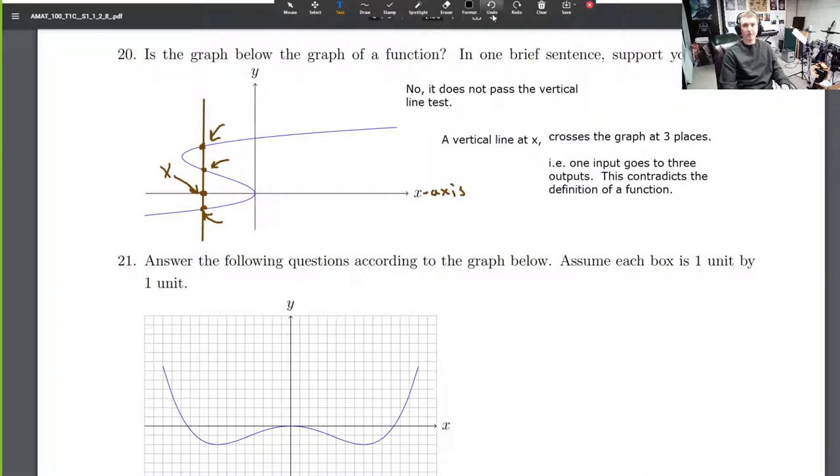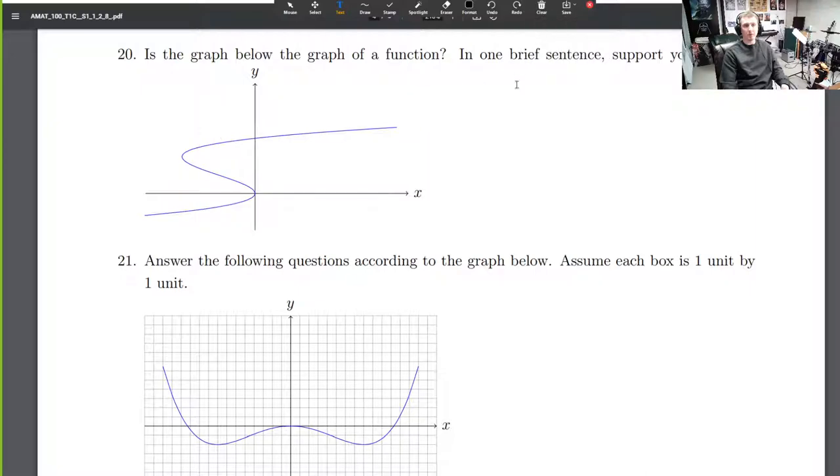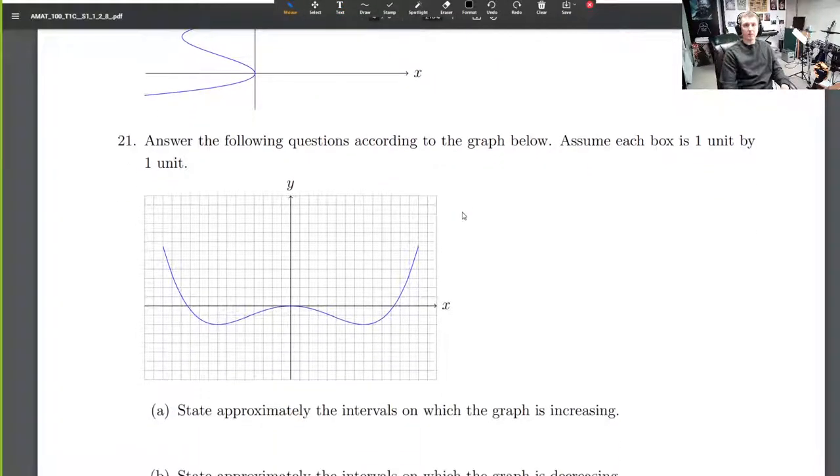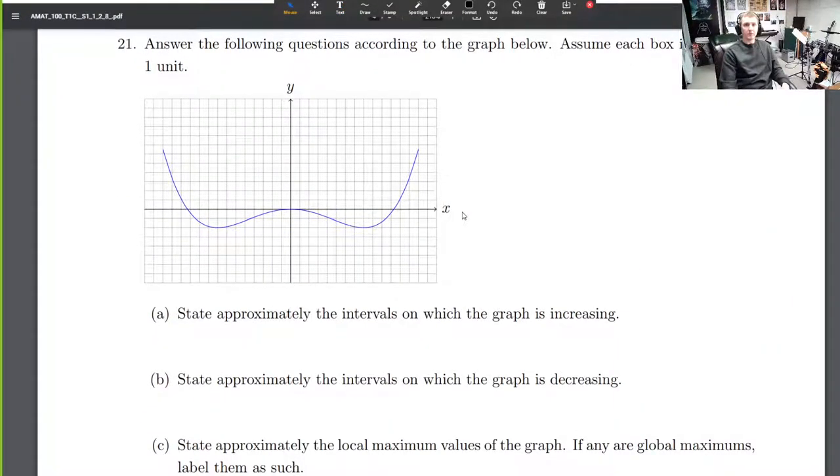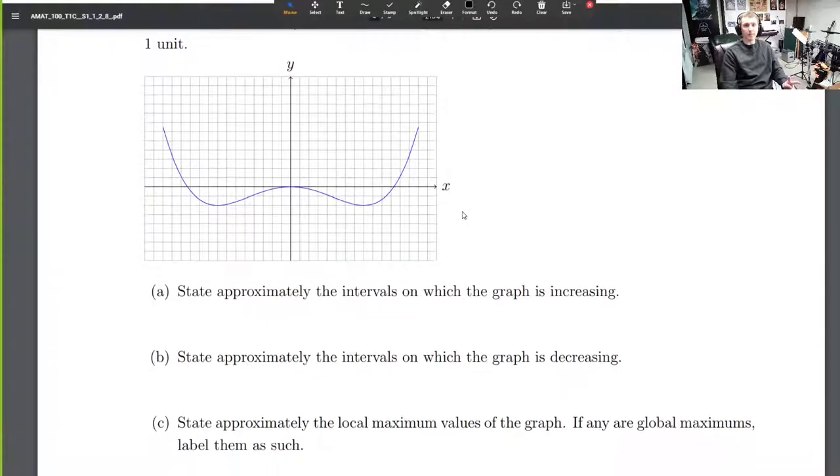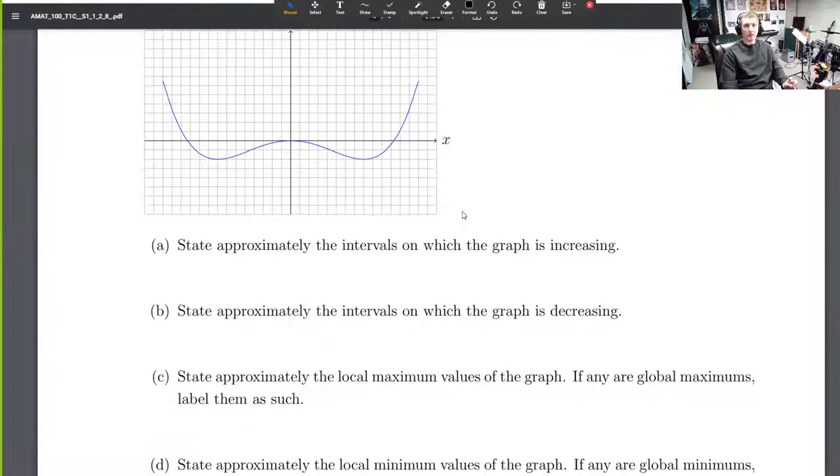Here we go. Now let's see what we have. I'm going to clear the drawings and move on. You could go back a few seconds and pause the video if you need to see that again. Question 21: Answer the following questions according to the graph below. Assume each box is one unit by one unit. Okay, here's our graph.